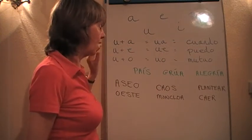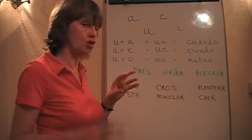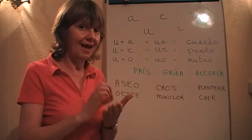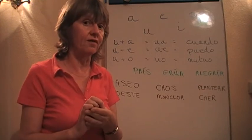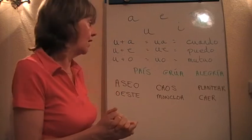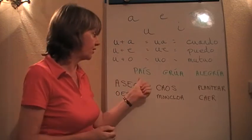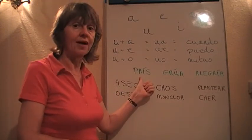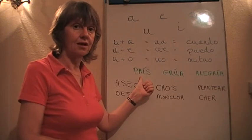Now, something more to mention about these strong-weak combinations is that they can be accompanied by an accent on one of the vowels, in which case it splits them up again into two syllables. I've got three examples of this. The word for country is país, país.